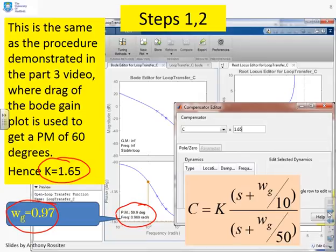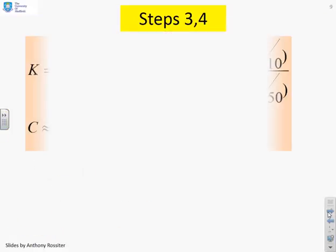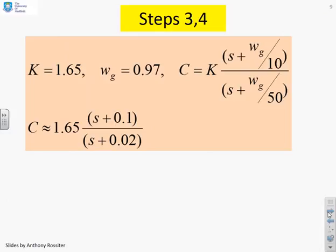Steps three and four: basically, you need to enter the values into SISOTOOL. I've simplified it slightly because having lots of decimal places really makes little difference. The compensator is roughly (s + 0.1) over (s + 0.02). Now I want to enter this into SISOTOOL.